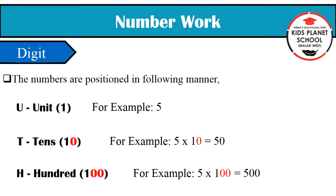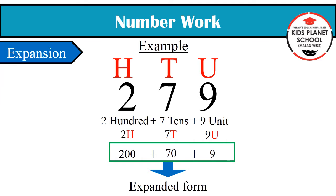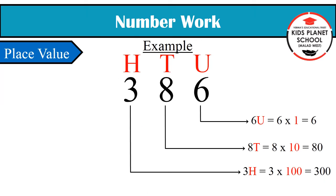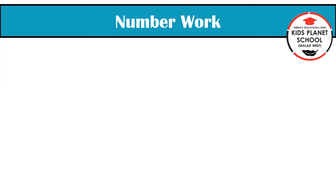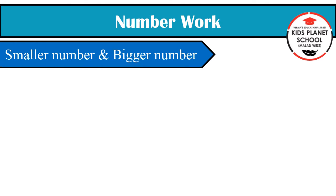Children, in Part 1, i.e. Digit, we have studied about how the numbers are positioned in units, tens and hundreds places. In Part 2, i.e. Expansion, we have studied how to expand a number. In Part 3, i.e. Place Value, we have studied how to find the place value of any digit in a number. In today's lecture, we will study the last part of our chapter, i.e. Smaller number and bigger number. So, let us start.